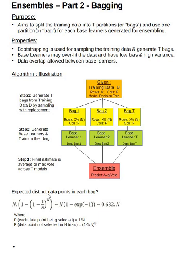So therefore, to summarize, the expected distinct data points in each bag is approximately 63.2% of the overall data points. That's a good thing to know.